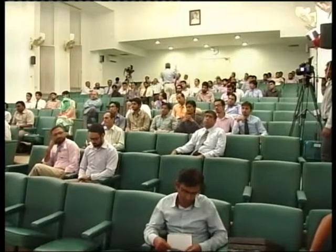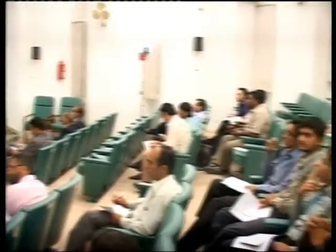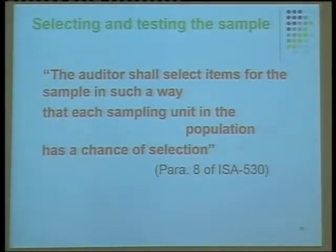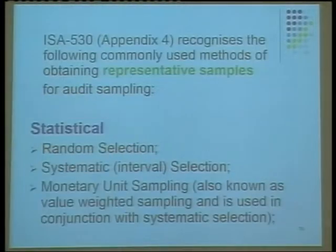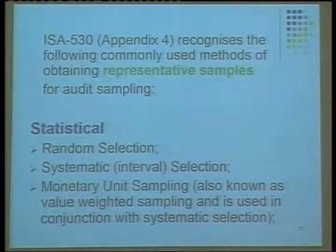When the inherent risk is high, different levels have been described for what you do. Regarding selecting and testing the sample — every unit should have a chance of selection. We should select items for the sample in such a way that each sampling unit has a chance of selection. The commonly used methods are the methods recognized by ISA, and that is why we will primarily deliberate on these methods. As mentioned, there are also many other methods available.